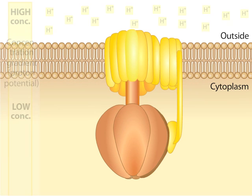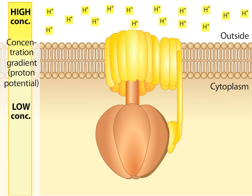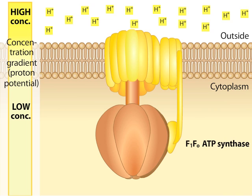A concentration gradient of protons across a membrane drives the synthesis of ATP by a large complex in the membrane called ATP synthase. ATP synthase, also called the F1-F0 ATP synthase, has two main parts.